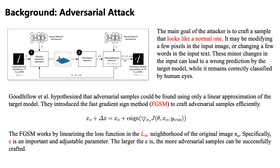Background: Adversarial Attack. The main goal of the attacker is to craft a sample that looks like a normal one — it may involve modifying a few pixels in the input image or changing a few words in the input text. These minor changes can lead to a wrong prediction by the target model, while remaining correctly classified by human eyes. Goodfellow et al. hypothesized that adversarial samples could be found using only a linear approximation of the target model, and introduced the Fast Gradient Sign Method (FGSM) to craft adversarial samples efficiently.